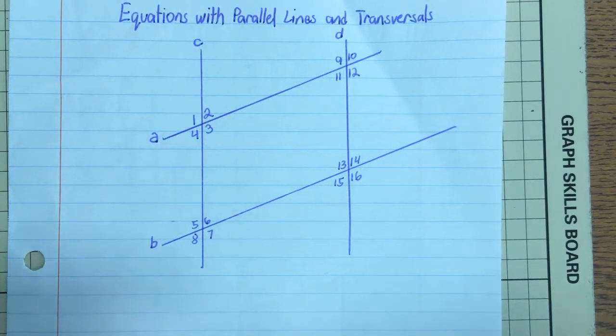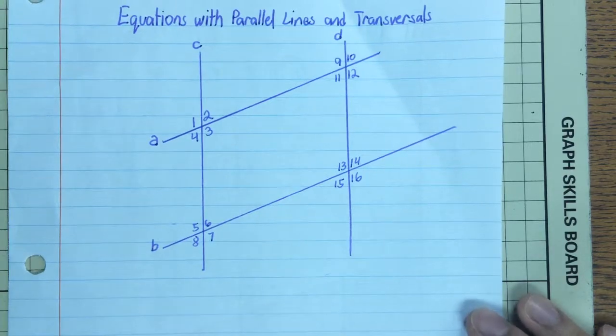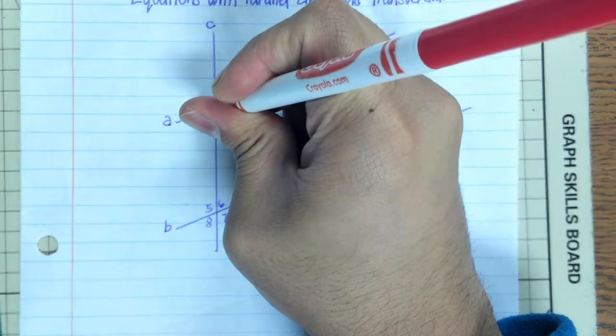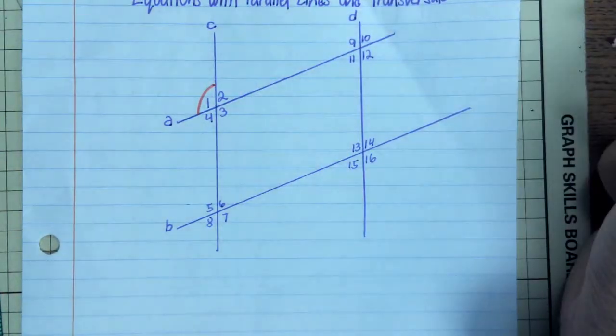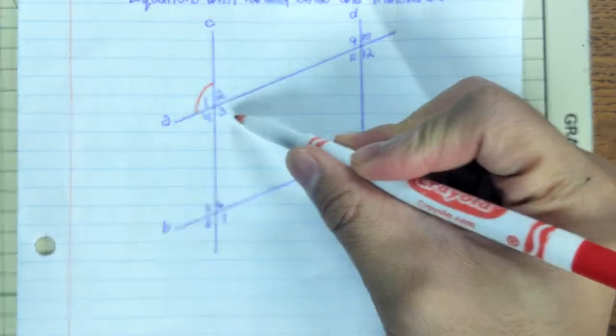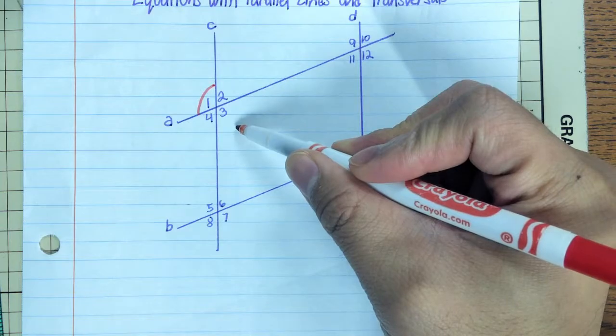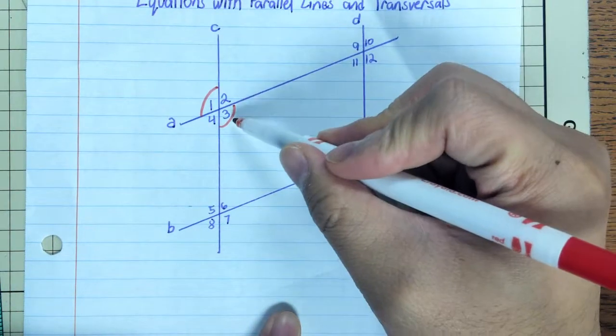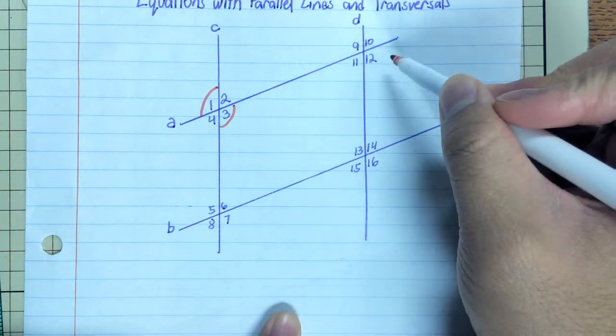Before anything else, the first thing I will show you is to indicate which angles are supposed to be congruent. Let me start with angle one. Angle one and angle three are vertical angles, therefore they're congruent. Then we have angle three with angle twelve are corresponding, that makes them congruent.